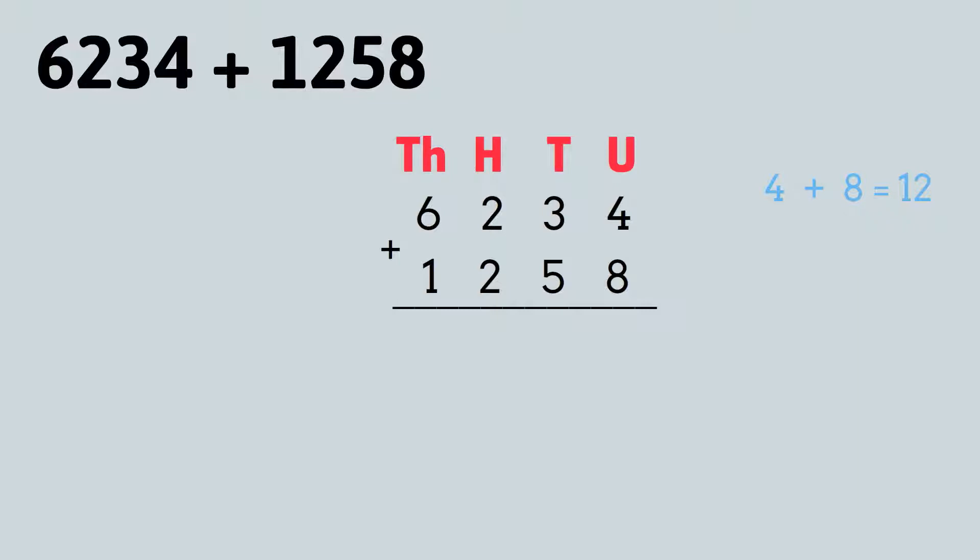One add three add five is nine, two add two is four, six add one is seven. Therefore, our answer is seven thousand four hundred and ninety two.